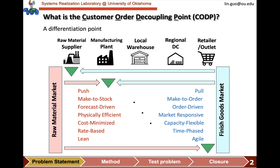What is the Customer Order Decoupling Point, or CODP for short? Essentially, CODP is the differentiation point in a supply chain that separates the push and pull strategy. The part of the supply chain upstream from the CODP is in the make-to-stock production mode — everything is produced based on forecast — whereas the part downstream from the CODP is in the make-to-order production mode, where only after an order is taken can production begin.